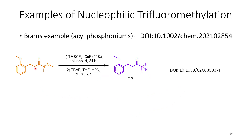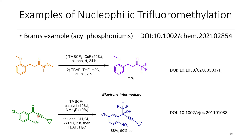To add CF3 to a carbonyl such as a Weinreb amide, TMS-CF3 is activated using cesium fluoride as a catalyst to form a hemiaminal-type product; subsequent treatment with TBAF converts it to the trifluoromethyl ketone. In another example, starting with a propargylic ketone, TMS-CF3 was added using tetramethylammonium fluoride as a catalyst, and a second step with TBAF converted the TMS-protected alcohol to the free alcohol. There is also a recent paper from a colleague describing preparation of trifluoromethyl ketones from acyl phosphonium derivatives.